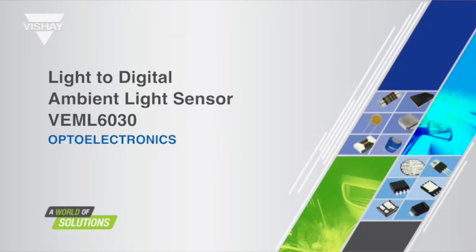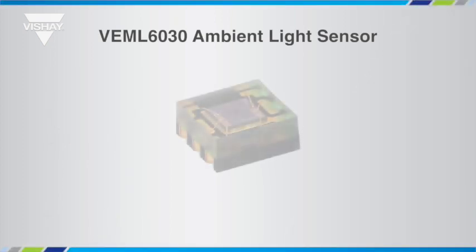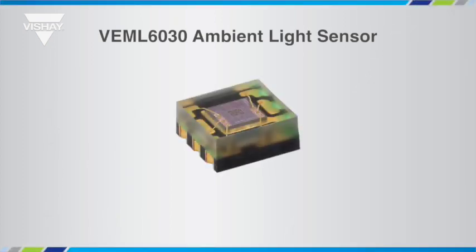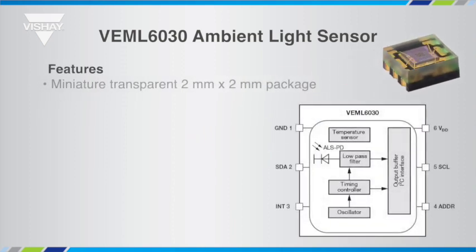The Optoelectronics Group of Vishay Semiconductor has introduced a digital ambient light sensor called the VEML6030. On a single chip, the VEML6030 includes an ambient light sensing photodiode and all the signal processing circuitry for it to be read by a microcontroller via an I2C interface.